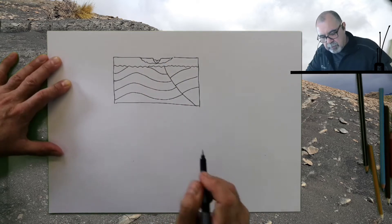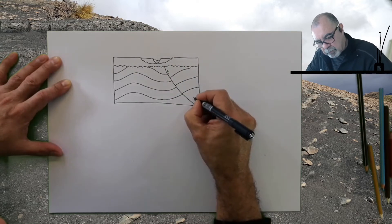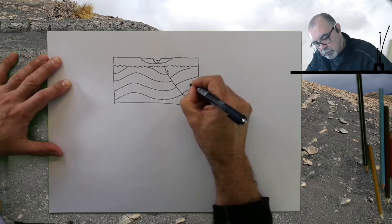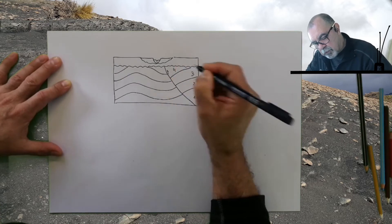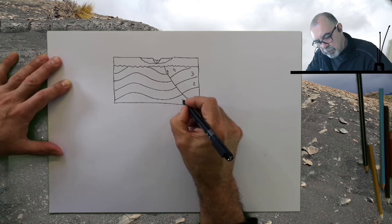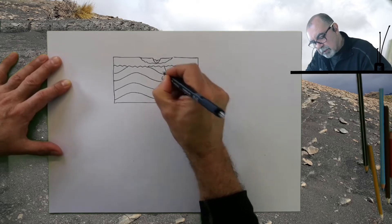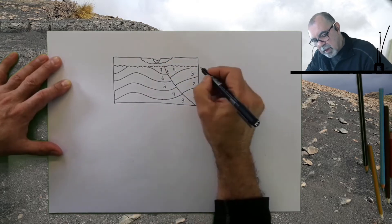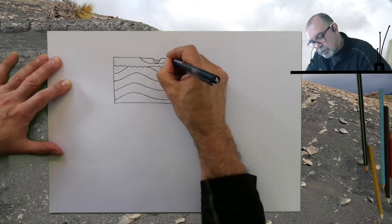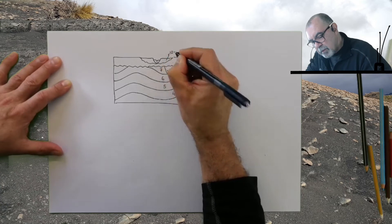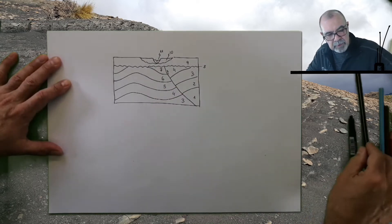So I will put the first step where we put some numbers here from one, two, three, four. Then this will be three, four, five, six, seven — eight is missing. Then we are going to have nine, ten, and eleven. So eleven units is a little bit more complex.